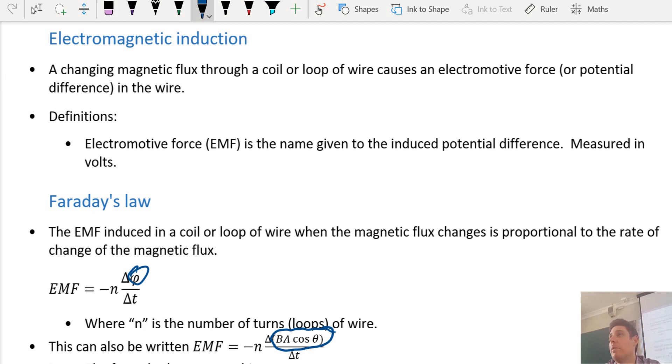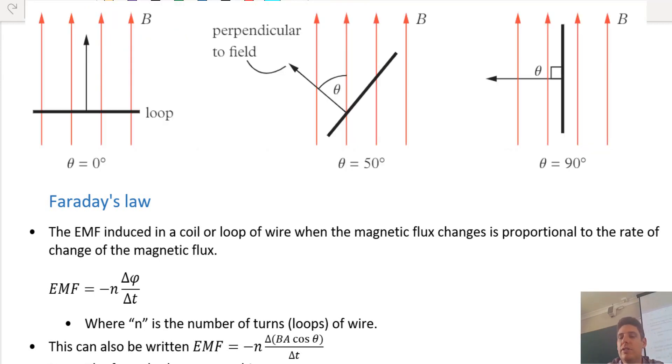Times cos theta. Theta was the angle between the loop and the flow.